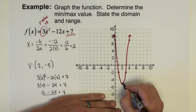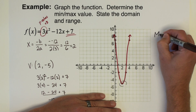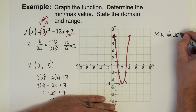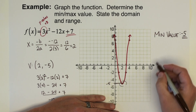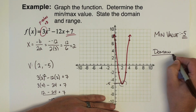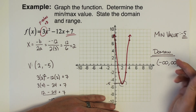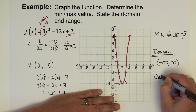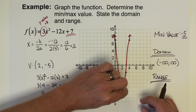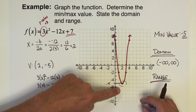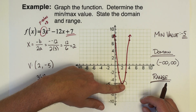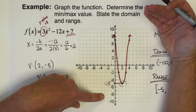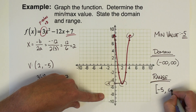Now for minimum and maximum value: this graph has a bottom point, so it has a minimum value. The minimum value is the lowest point on the graph, which is negative 5. For domain and range: the domain is negative infinity to positive infinity, just like the last one, because the graph keeps going left and right as it goes up. The range is different from the last example — because this graph opens upward, it has a bottom point but no top point. So the range starts at negative 5 with a square bracket and goes up toward positive infinity.